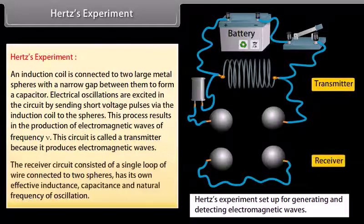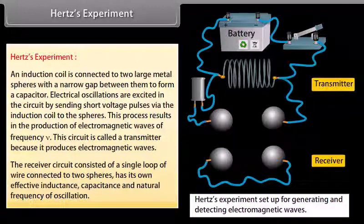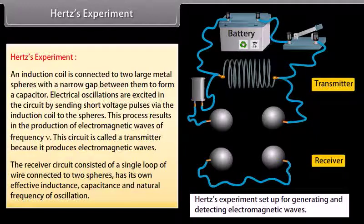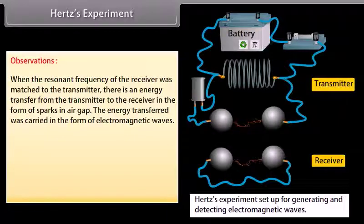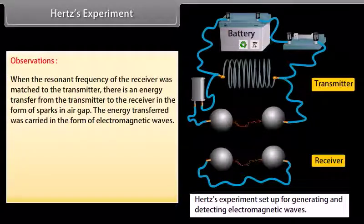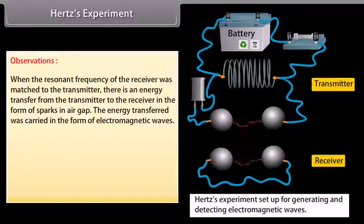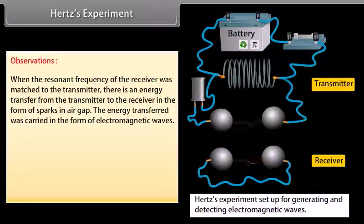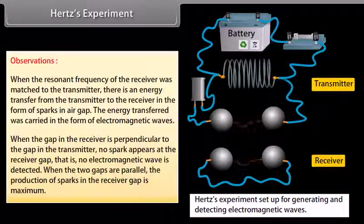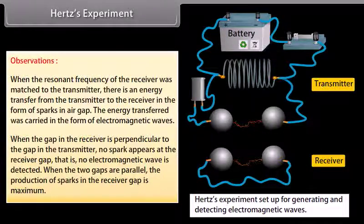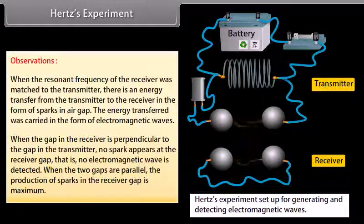The receiver circuit consisted of a single loop of wire connected to two spheres has its own effective inductance, capacitance and natural frequency of oscillation. Observations: When the resonant frequency of the receiver was matched to the transmitter, there is an energy transfer from the transmitter to the receiver in the form of sparks in air gap. The energy transferred was carried in the form of electromagnetic waves. When the gap in the receiver is perpendicular to the gap in the transmitter, no spark appears at the receiver gap. That is, no electromagnetic wave is detected. When the two gaps are parallel, the production of sparks in the receiver gap is maximum.